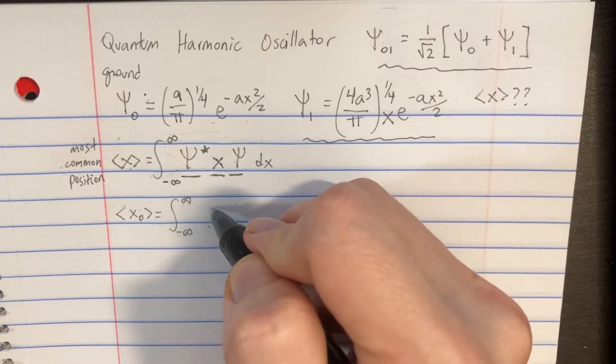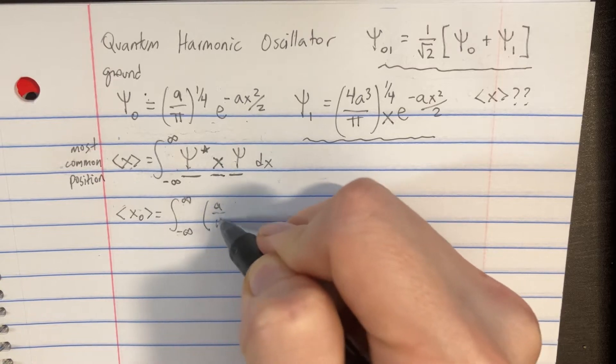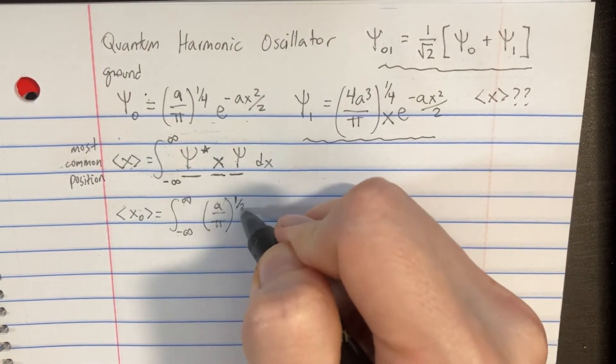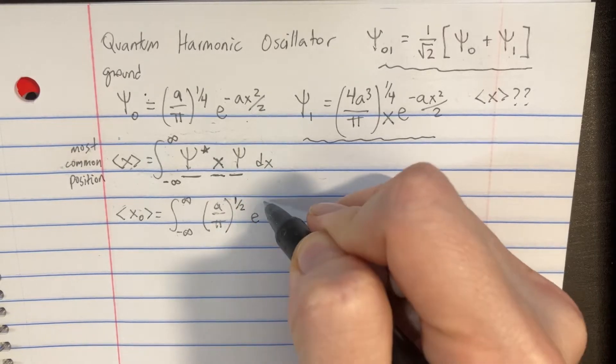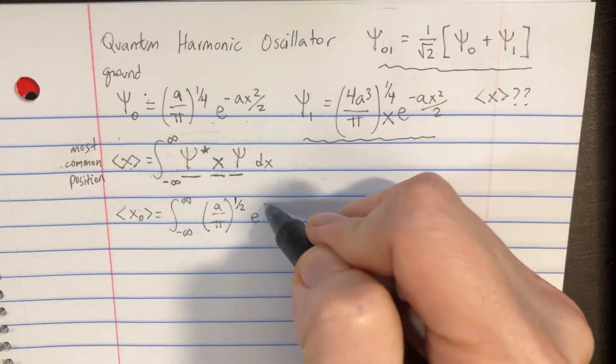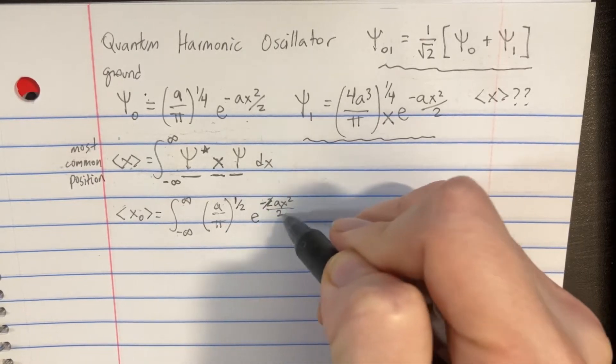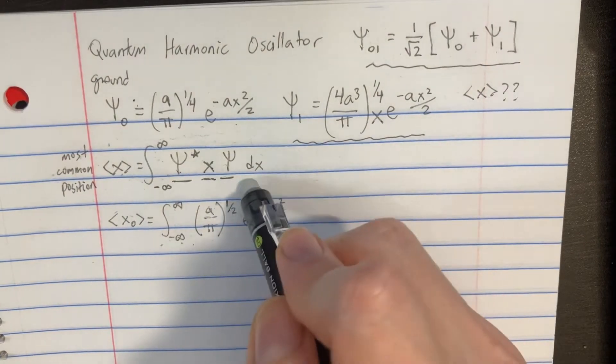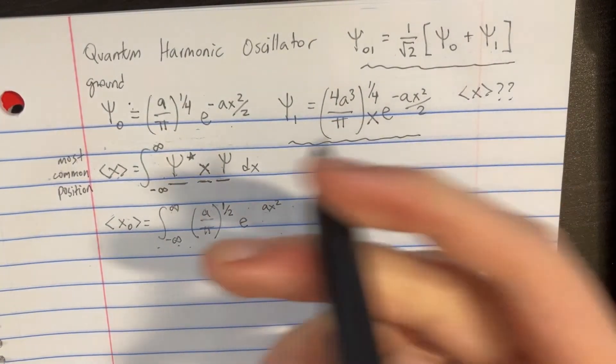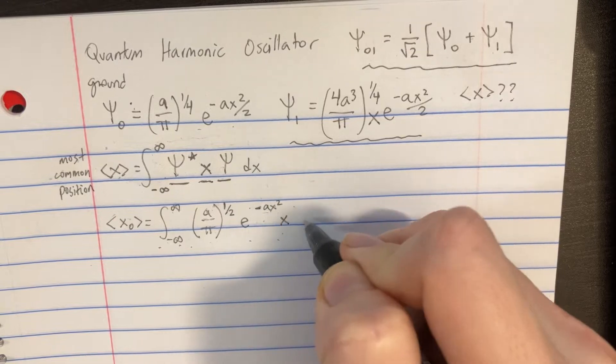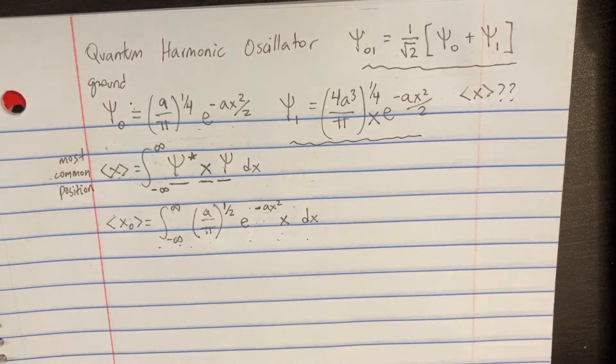This isn't a multiplication sign, but we'll put in a over pi, and we have to square this component, so we'll call that a to the 1.5, and then we'll have an e, and then we kind of have to square this, so it should be like a negative 2ax squared over 2. These will cancel out, so I'll delete these and just make it a negative ax squared, and then let's add in the x times the dx, and there we go.